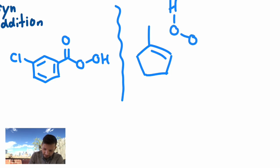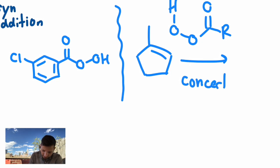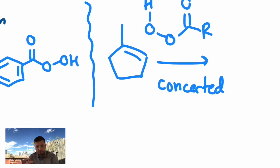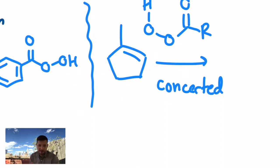It's this group here that matters. And it actually happens all in one step. This is a concerted mechanism. Concerted meaning it happens all in one step. Per acids, like peroxides, are sources of electrophilic oxygen. So we have this extra oxygen that's quite electrophilic and can get attacked. So draw an arrow from your pi bond in the alkene to that oxygen.